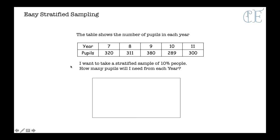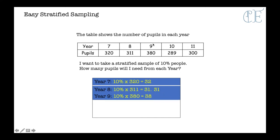In this case it says I want to take a stratified sample of 10% of the people. How many pupils will I need from each year? So all we need to do is find 10% of each year group. So 10% of year 7 is 32, 10% of year 8 is 31.1, we'll probably just round that down to 31. Then year 9 is 10% of 380 which is 38. Year 10 is 28.9 but we'll just round that up to 29, and year 11 is 10% of 300 which is 30. So these decimal ones we'll just round them to the nearest whole number.